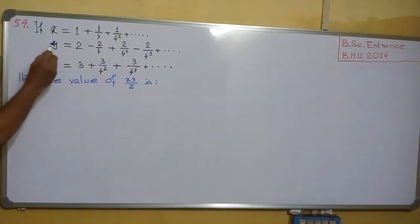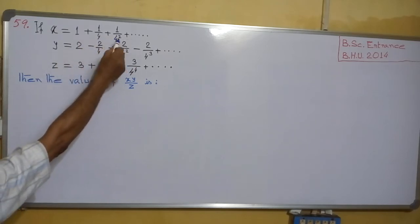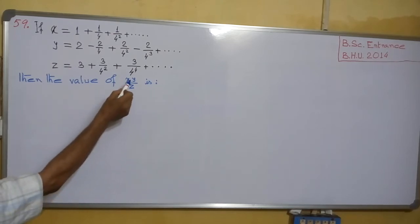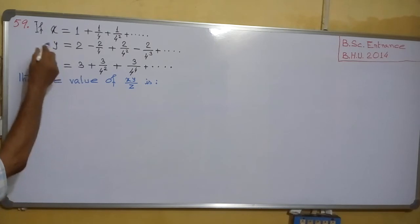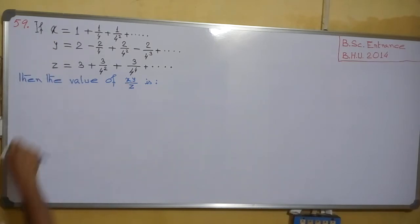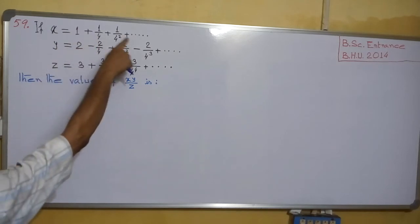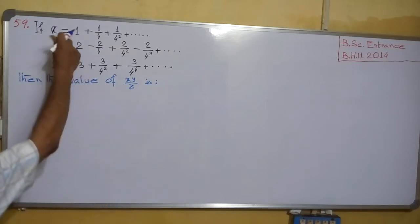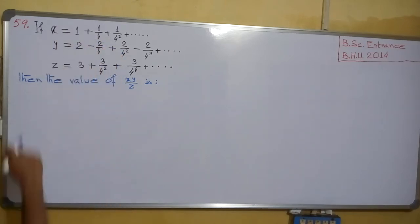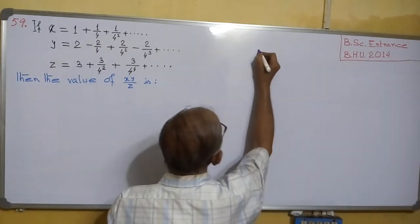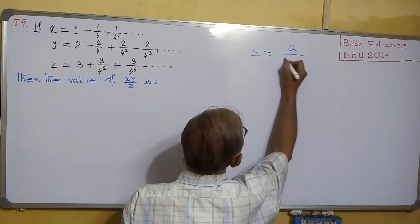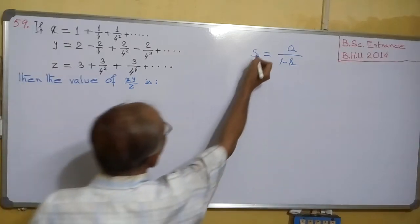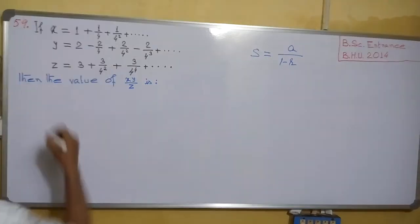Now see this next problem. If x = 1 + 1/4 + ..., y = this series, z = this series, then find the value of x·y/z. We have to find x, y, and z separately. All are infinite geometric series (infinite GP), and the sum of an infinite GP equals a/(1 − r), where r is the common ratio. Remember this formula.